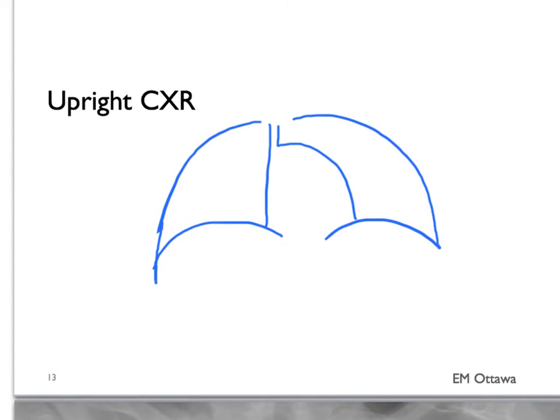On the upright chest x-ray, we will look for any air under the diaphragm that suggests a perforation. So in this schematic, these two curved structures are diaphragms. And you want to look for free air underneath that, on the upright chest x-ray.